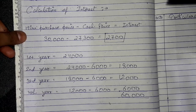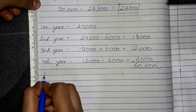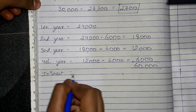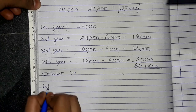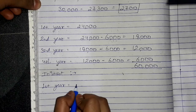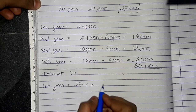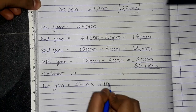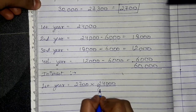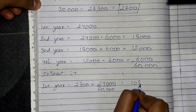Now we will distribute the interest. Total interest is 2,700. In the first year we write 24,000 divided by 60,000 multiplied by 2,700, which gives interest of 1,080 for the first year.